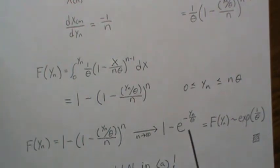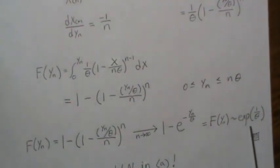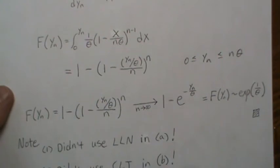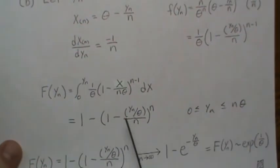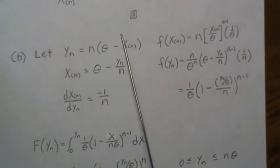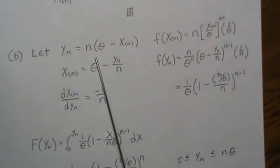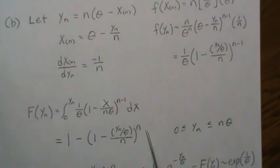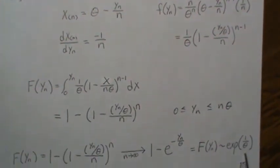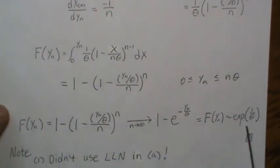If this, this right here is the CDF of some random variable that is an exponential distribution. So that tells us that this quantity right here limits to an exponential distribution with parameter one over theta. And that's what we wanted to show.